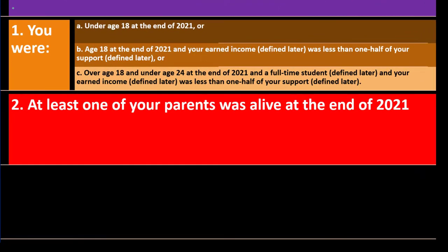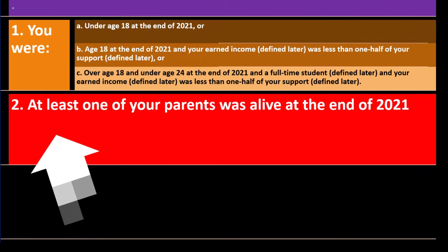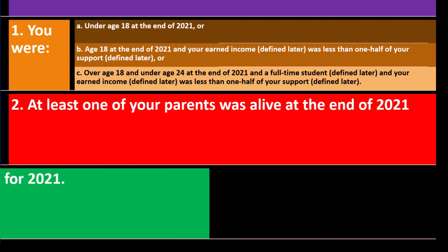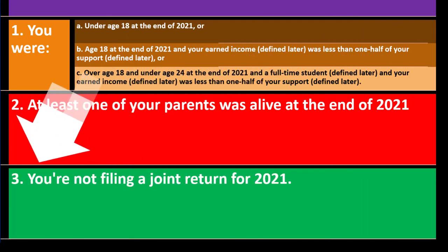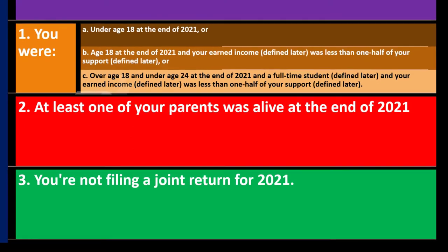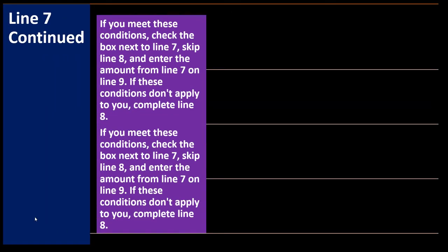Condition 2: at least one of your parents was alive at the end of 2021. Condition 3: you are not filing a joint return for 2021. Filing a joint return typically means you're not a dependent at that point, and you would generally be filing your own return.